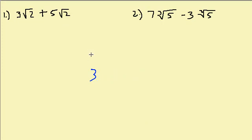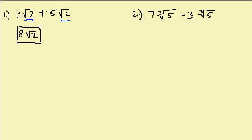Now let's look at the first problem. We have 3 square roots of two plus 5 square roots of two, and we can see that the radicals are the same, so we add them. 3 plus 5 is 8, so we get 8 square root of 2, and there's our answer.